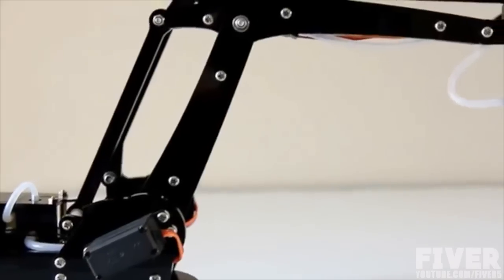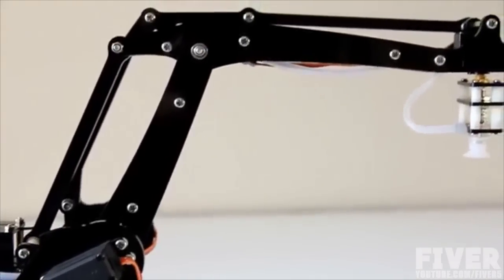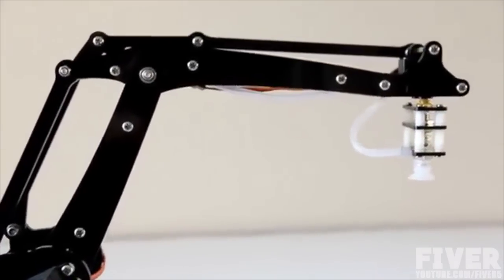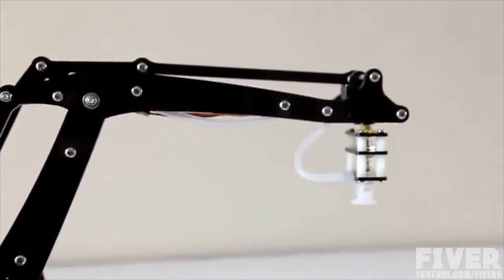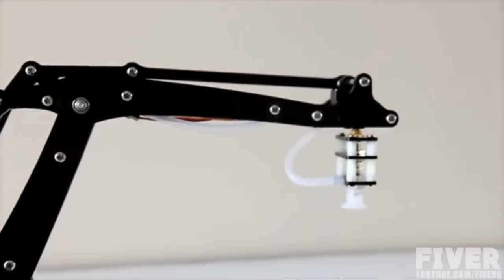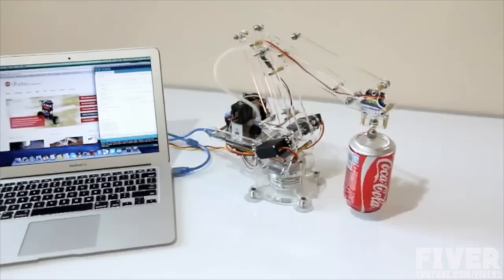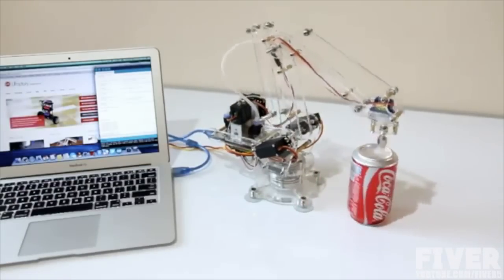There are three servos on the base to control the main movement of the arm and one mini servo on the top to move and rotate an object by using a gripper or a vacuum cup. The vacuum cup would have enough power to lift and move a full can of soda.